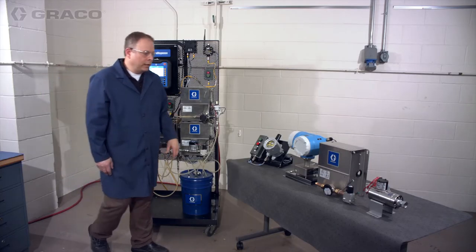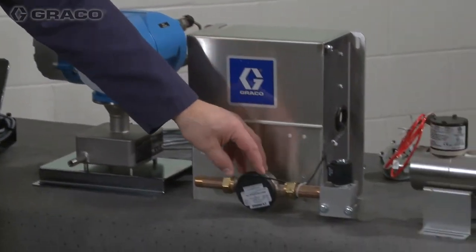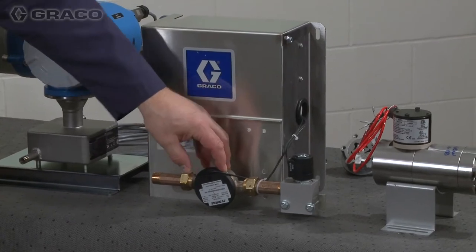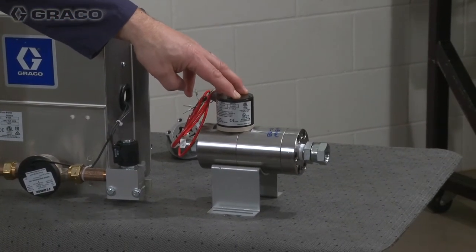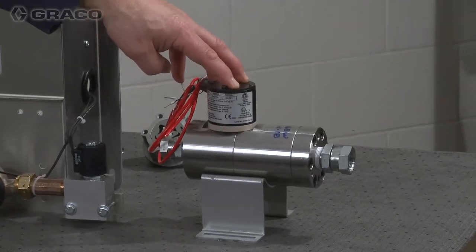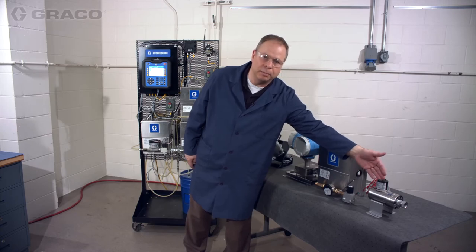And then over on the table over here I have a couple other styles. This is the Coriolis meter. This is the water meter. And then over here would be the helical meter, or what we would consider to be the HG6000. This meter would be used on those thicker materials or more viscous materials.